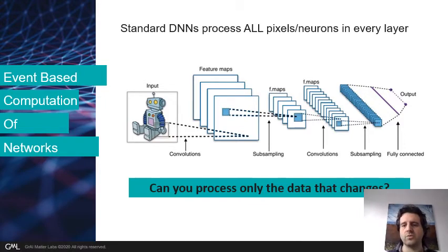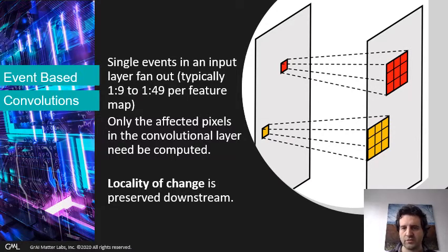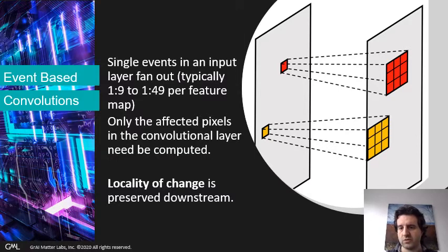That's not really true, because most of the networks that we use are convolutional. And in a convolutional network, if you think about a convolutional layer, if something changes in one input, this change in the next layer is only going to affect a relatively limited area due to the kernel around the pixel that has changed. And in fact, this means that most of the change is going to be localized and it's going to be preserved downstream in the neural network.